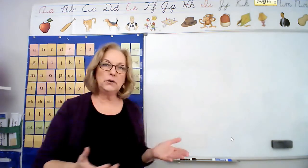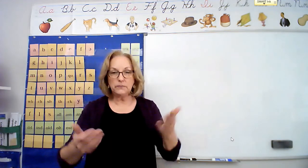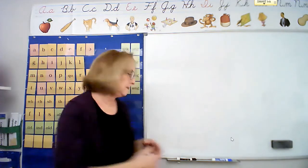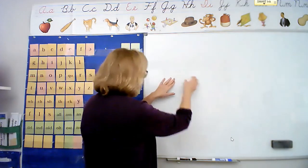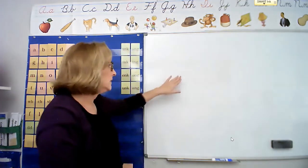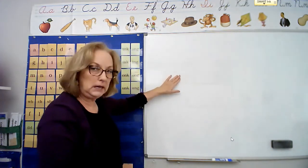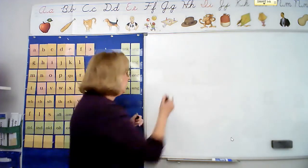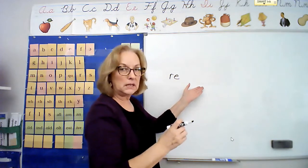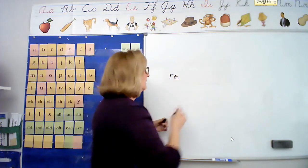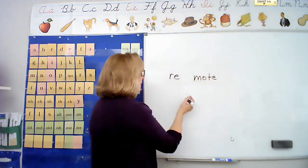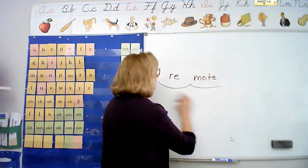So I'm going to say the word remote. Repeat it, remote. How many syllables in that word, remote? Let's see, I'll put my frames up. Re-mote. So there's two syllables in that word. First syllable is re. How do we spell it? R-e. Second syllable is mote. How do we spell that? M-o-t-e. We scoop it, re-mote, remote.